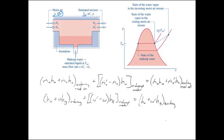Taking this whole equation and solving for the humidity ratio, we get the enthalpy of the air at the adiabatic saturation temperature. The adiabatic saturation temperature is the temperature of our fluid at the exit — the mixture cools from the entering air temperature down to where it becomes saturated, and this is done via an adiabatic process with no heat loss to the environment, no energy transfer out of the control volume.